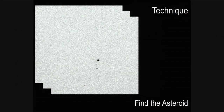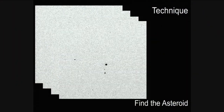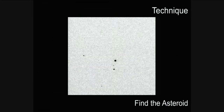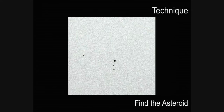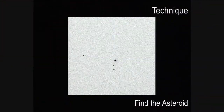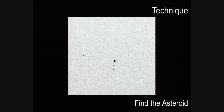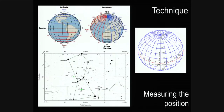Here are four images from my telescope. They're really hard to distinguish because everything looks like a star. Using the astrometry technique, I've created an animation — can you guys find the asteroid? It's the little thing that's moving. Can you tell me which asteroid that is?